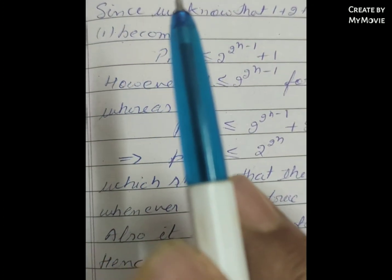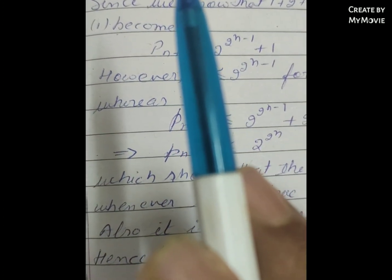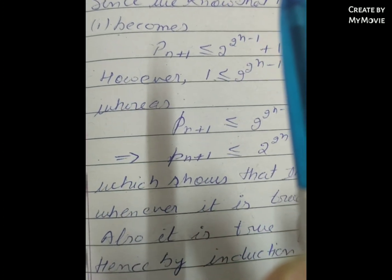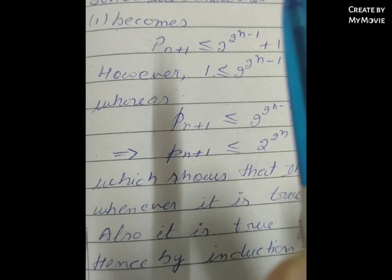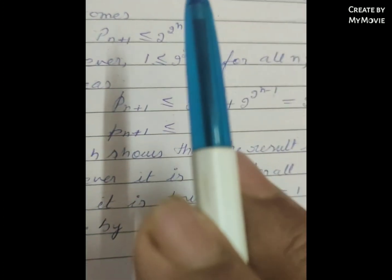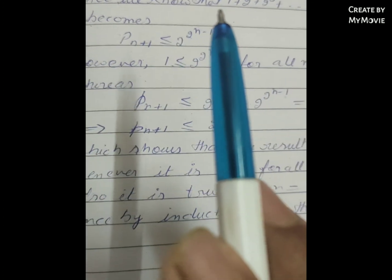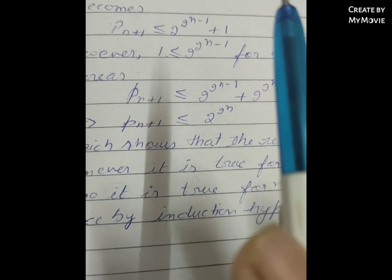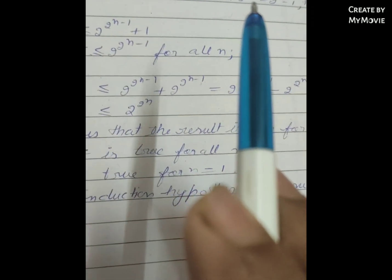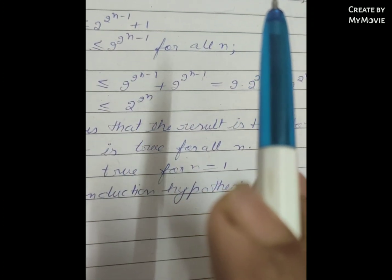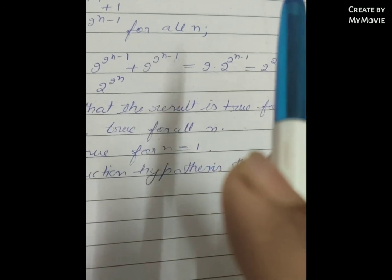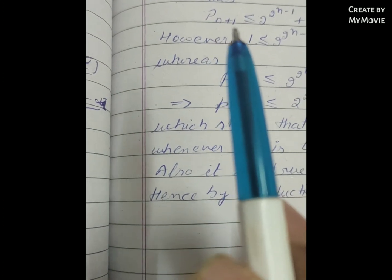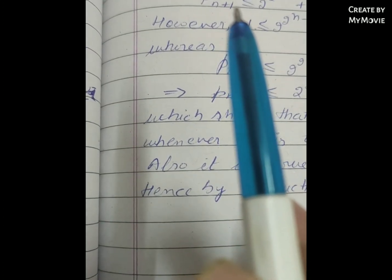This is less than or equal to 2^(1 + 2 + 2^2 + ... + 2^(n-1) + 1). Now since we know that 1 + 2 + 2^2 + ... + 2^(n-1) = 2^n − 1.